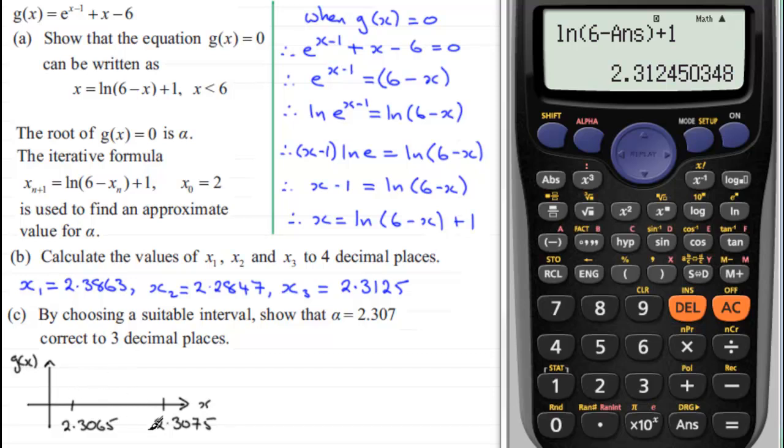But what I'm trying to look for is a change in sign. We want the graph to either go from a positive value here to a negative value, or from a negative value to a positive value, indicating that the graph has crossed the x-axis in this interval, suggesting then that we've got a root α which equals 2.307 to 3 decimal places.